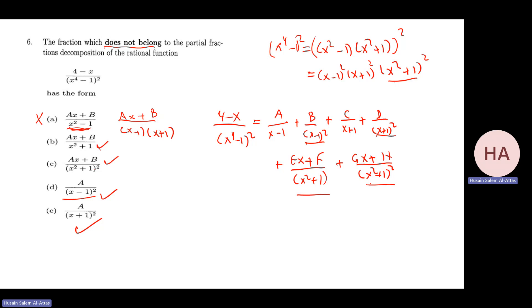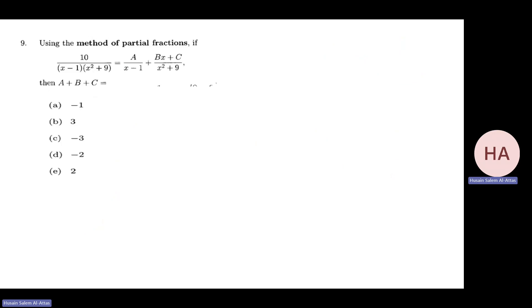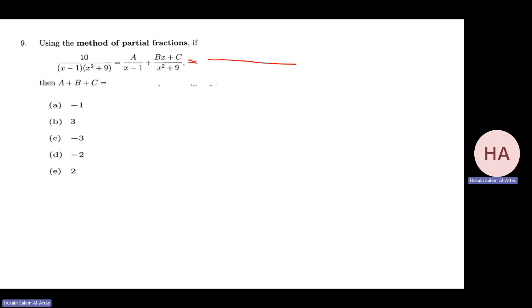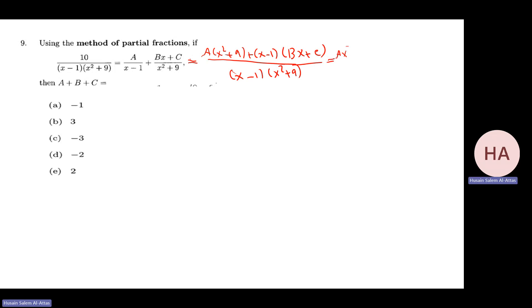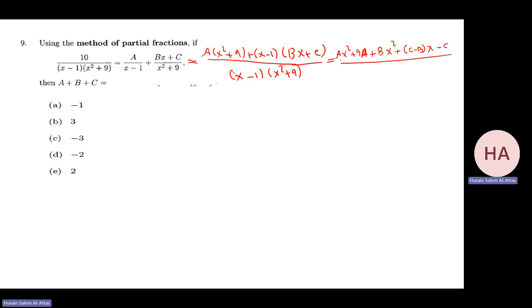This is the only thing to remember. Using the method of partial fractions to find A + B + C, I compute the decomposition. That gives A(x² + 9) + (x-1)(Bx + C) over the denominator, which expands to Ax² + 9A + Bx² + (C - B)x - C.